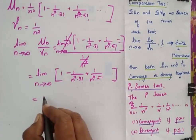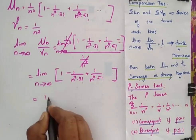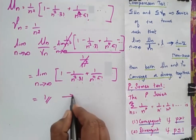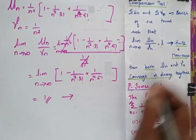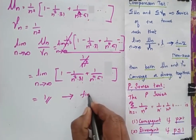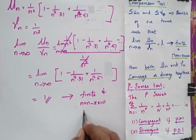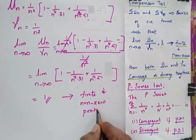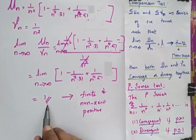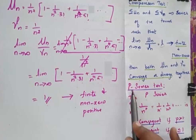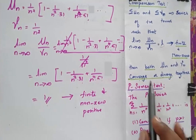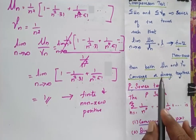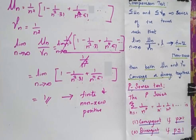When we substitute infinity, the value we get is 1. This is finite, non-zero, and positive. So we apply the p-series test to check whether the series converges or diverges.